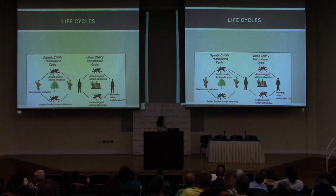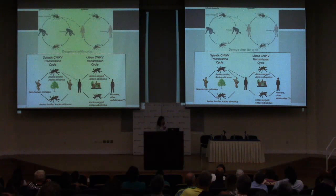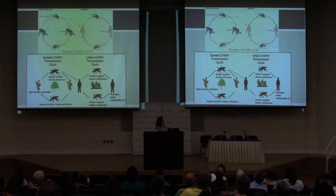As for dengue, the life cycle looks a lot like chikungunya's. In evolutionary history there was a similar sylvatic cycle, but in the more recent past — in outbreaks occurring over the last 50 years or so — it's really all about the urban cycle of dengue, again involving Aedes aegypti mosquitoes and human populations that get sick enough to infect uninfected mosquitoes and continue the cycle.